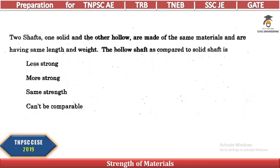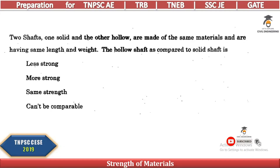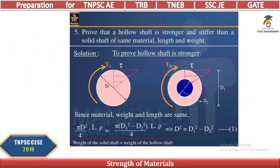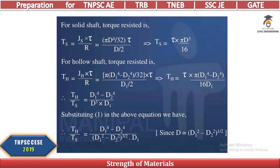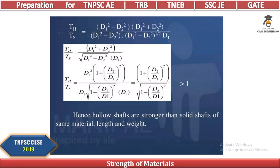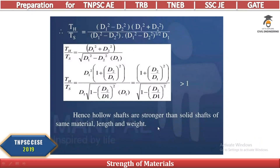Two shafts, one solid and one hollow, are made of the same material and have the same length and weight. Comparing the hollow shaft to the solid shaft — same cross-sectional area, same material — hollow shafts are always stronger than solid shafts of the same material, same length, and same weight.